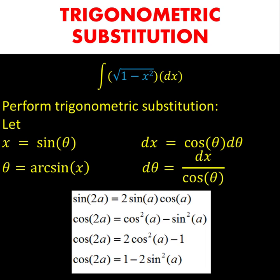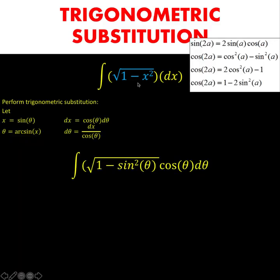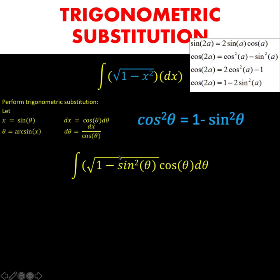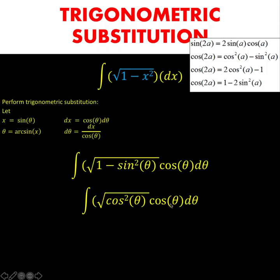Aside from these substitutions, we need to recall also the following double angle identities — these are the prerequisite knowledge we need to remember in order to find this integral. Because of our substitution x equals sine theta, we now substitute sine squared theta for x squared, and we replace dx with cosine theta d theta. Recall that 1 minus sine squared theta is equal to cosine squared theta, so we replace 1 minus sine squared theta with cosine squared theta.